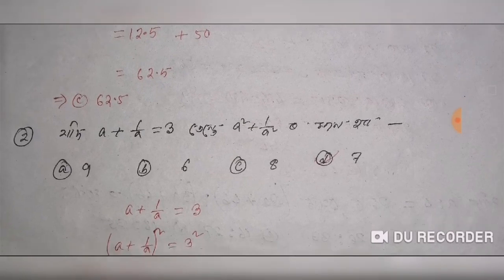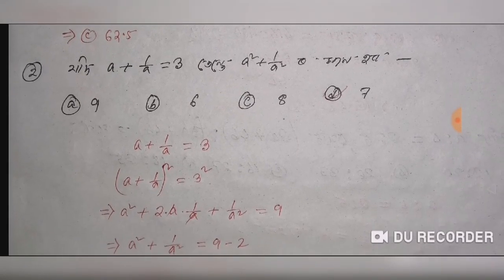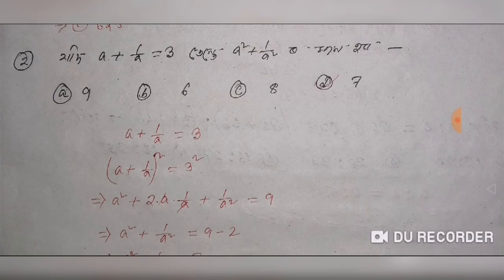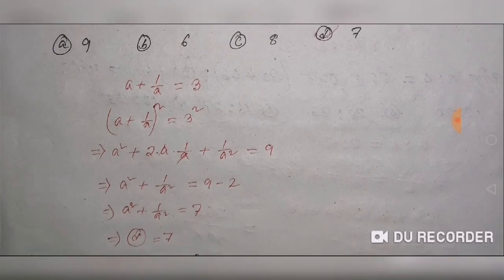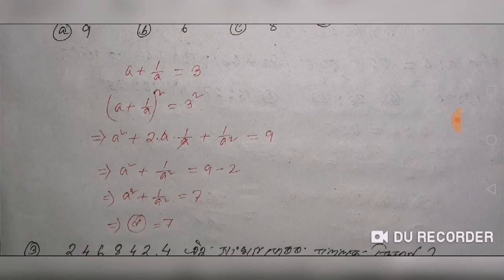The question is option D A. If A plus 1 by A equals 3, then A squared plus 1 by A squared is the option. Taking A plus 1 by A equals 3, squaring both sides: A plus 1 by A whole square equals 3 squared. Using the formula A squared plus 2A into 1 by A plus 1 by A squared equals 9.